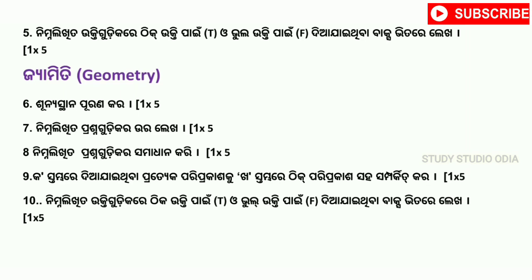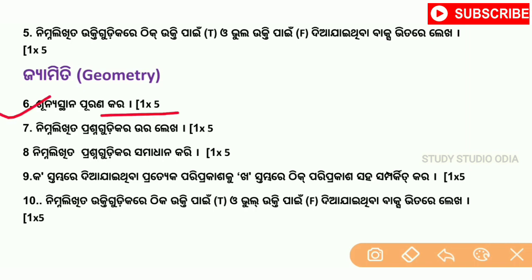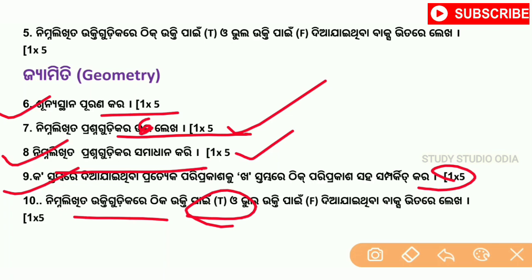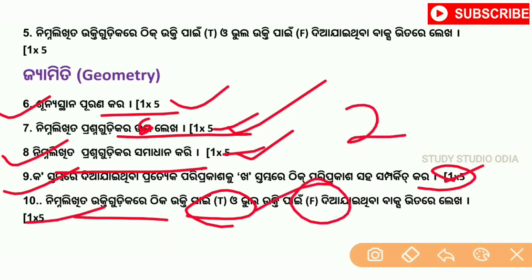For True/False type questions we will see 5 marks. We will see algebra and geometry distribution — 5 marks, 1.5 marks, and 5 marks each. True and False carry 5 to 10 marks, totaling 25 marks.